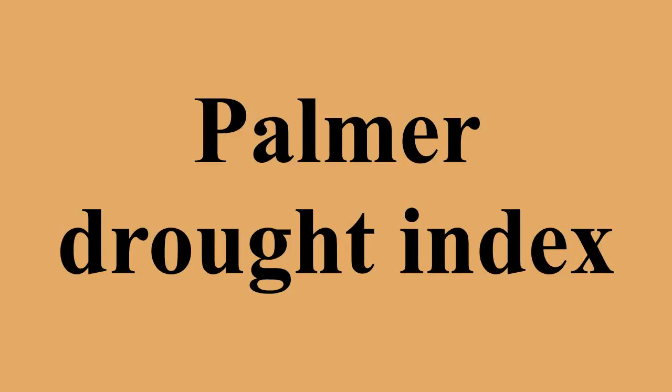The index has been most effective in determining long-term drought, a matter of several months, but it is not as good with conditions over a matter of weeks. It uses 0 as normal, and drought is shown in terms of negative numbers — for example, minus 2 is moderate drought, minus 3 is severe drought, and minus 4 is extreme drought.